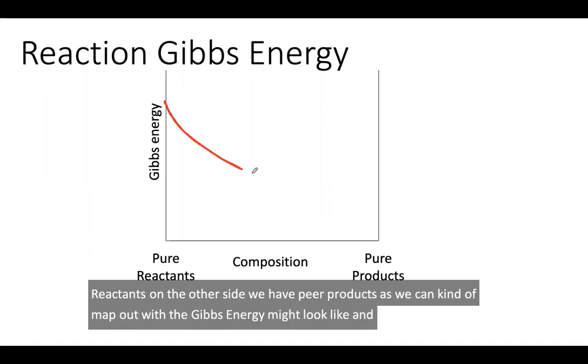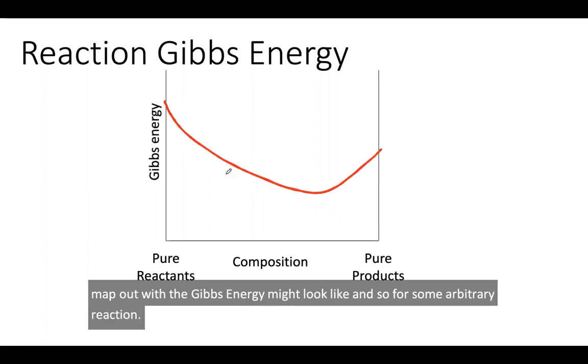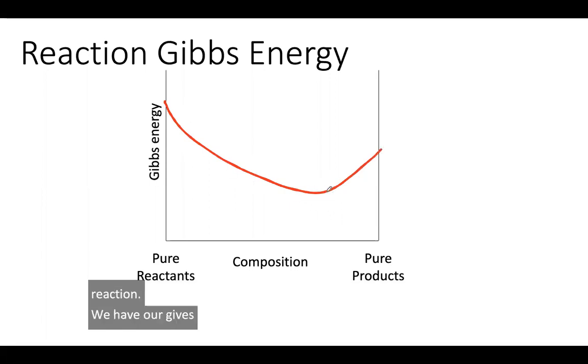And so for some arbitrary reaction, we have our Gibbs energy is at its minimum when it has some fraction of products versus reactants.